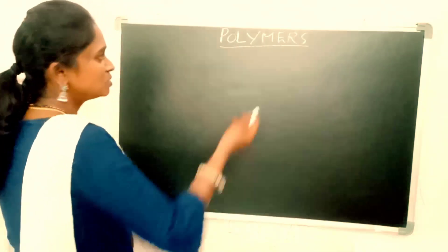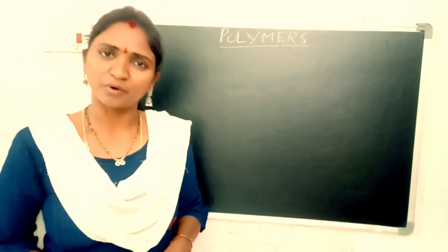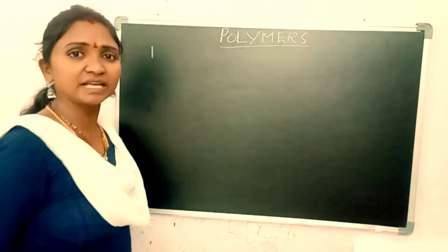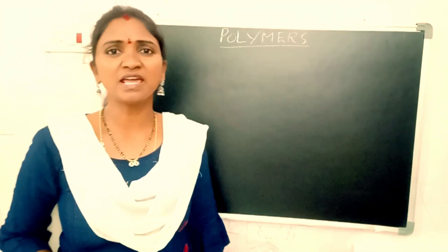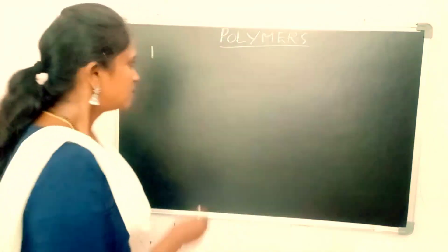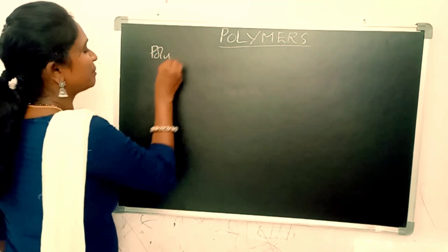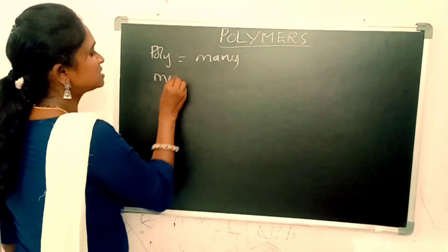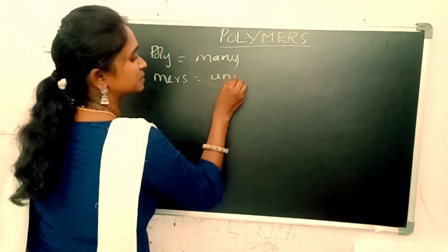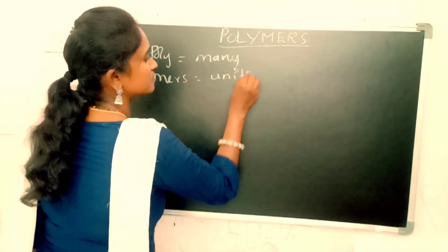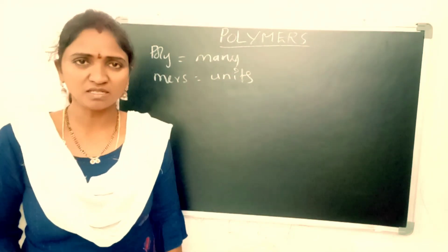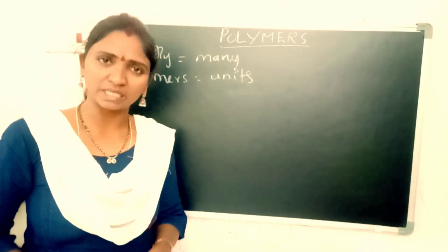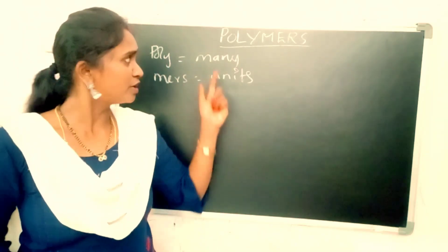Now, what is meant by polymer? First of all, polymer is a Greek word. Here, 'poly' means many and 'merse' means units. So, polymer means a combination of many units.